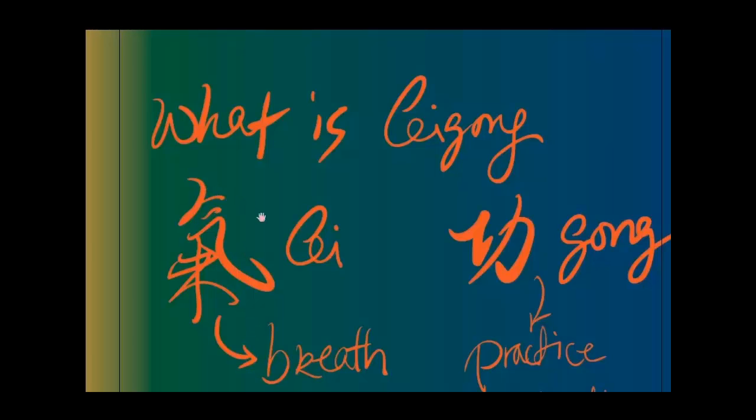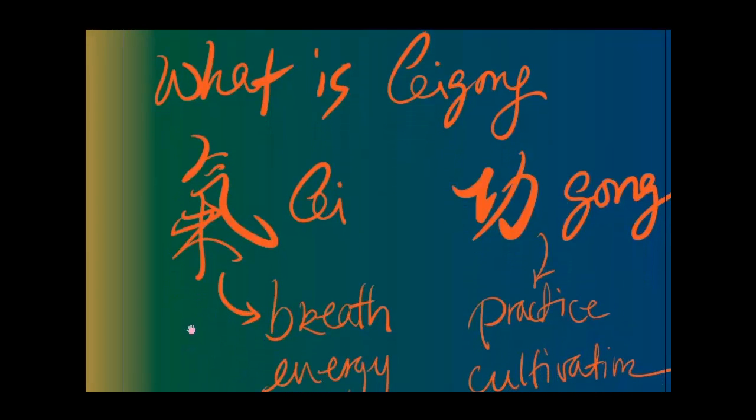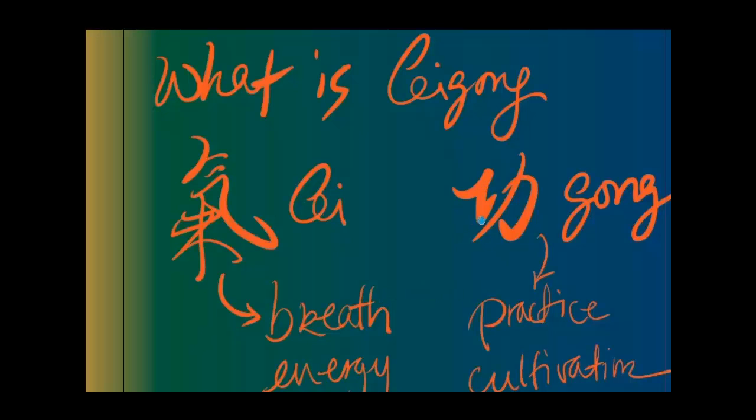What is Qi Gong? The word Qi in Chinese has a characteristic of air rising up and originally is derived from fermentation of rice grain fermenting and the air and the gases escaping. It can mean breath or energy, while the Gong here means practice or cultivation.